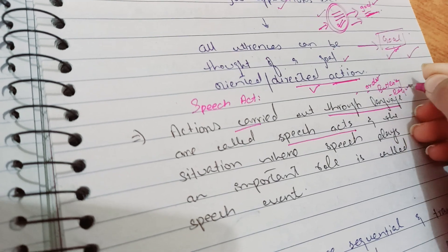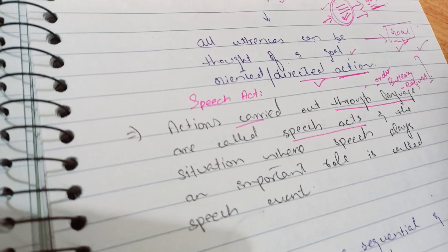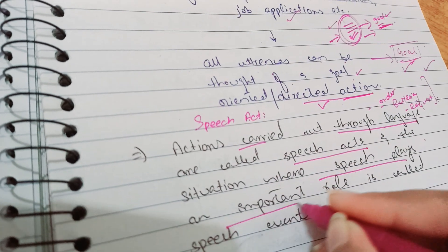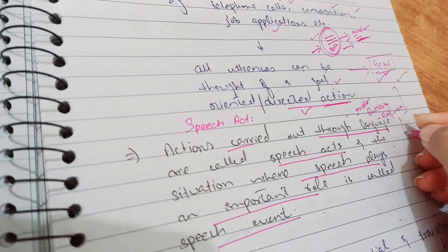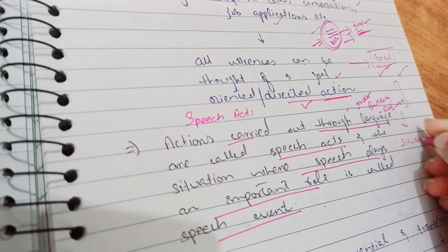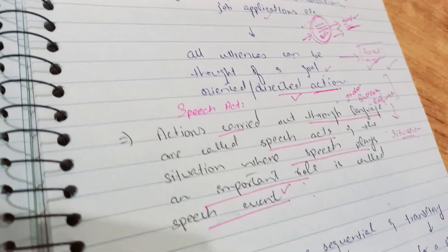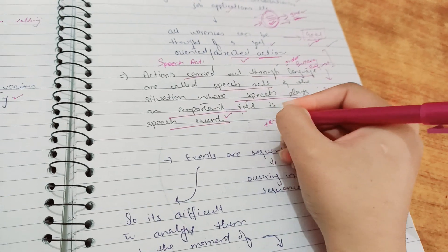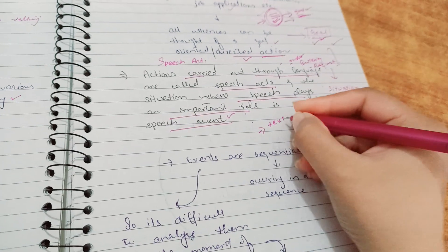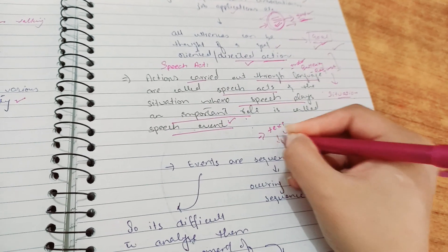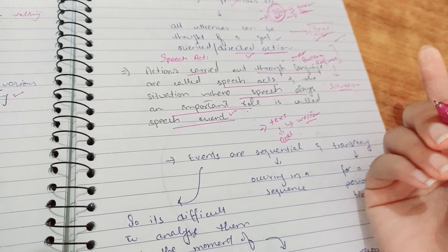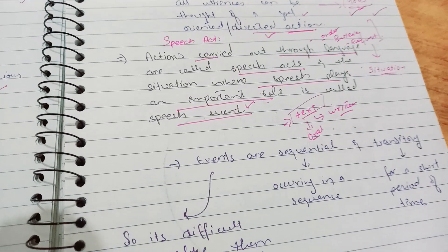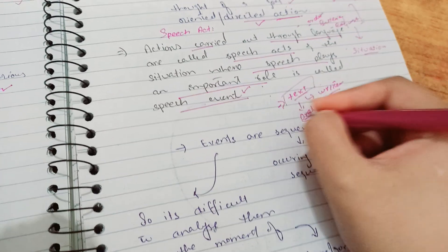Requests and similar things are speech-oriented acts. The situation where speech plays an important role is called a speech event. Now, when we have language and need to do text analysis, the text can be written or oral. Oral text is not what we deal with in books. The question is: what is oral text and how does it exist?